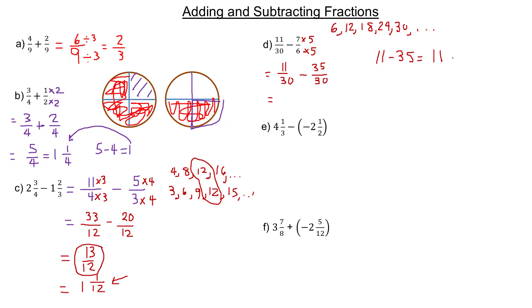That's the same as 11 plus negative 35 — you can change any subtraction into an equivalent addition. When doing that with integers, you subtract the numbers, and that gives 24. The integer negative 35 has more negatives than the 11; it has 24 more. That's why the answer is negative 24, so it would be negative 24 thirtieths.